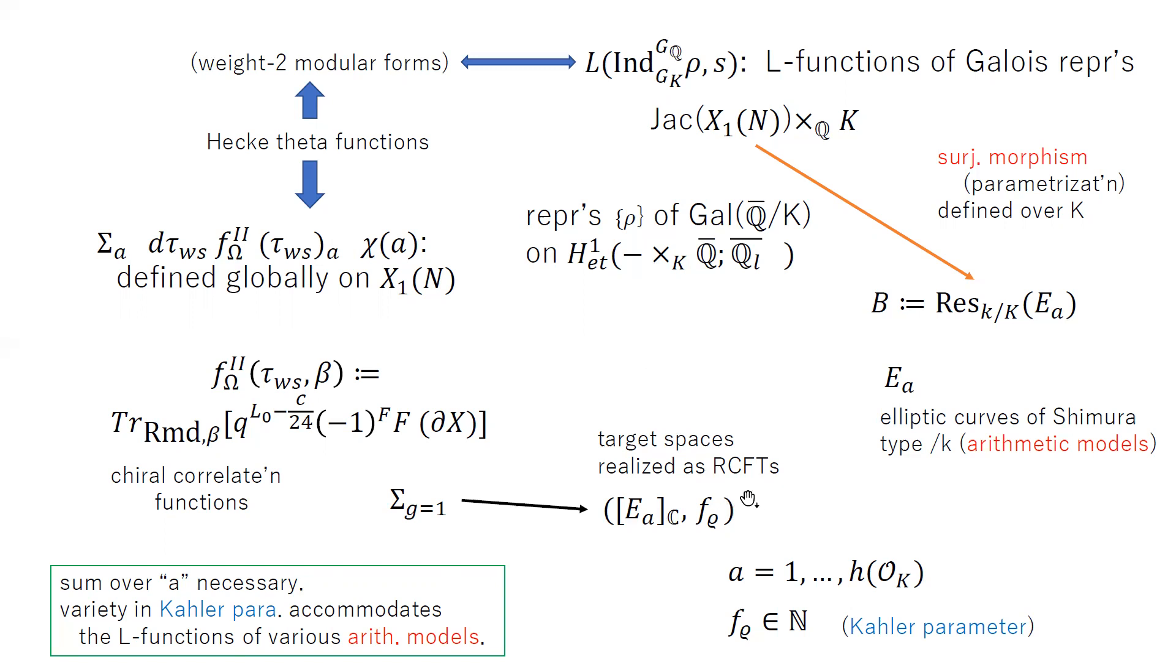Now incidentally in string theory, we may think of the elliptic curves seen as complex analytic manifolds as target space in string theory, and we add also the Kähler parameters as well. And when we think of the genus one amplitude, that's some specific class of observables, it's well defined.